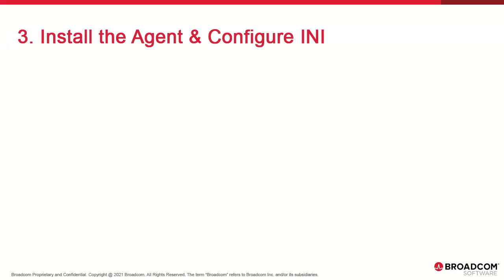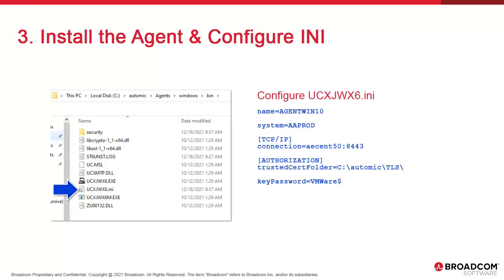We install the agent using the executable. There's an associated INI file. Here are the basic settings for the agents. The agent has a name — this can be anything you want, although we recommend a naming convention. By default the value is win01. We'll set it to the hostname. Then we have the system name. This should be consistent across AE, AWI, Agents, and Analytics.